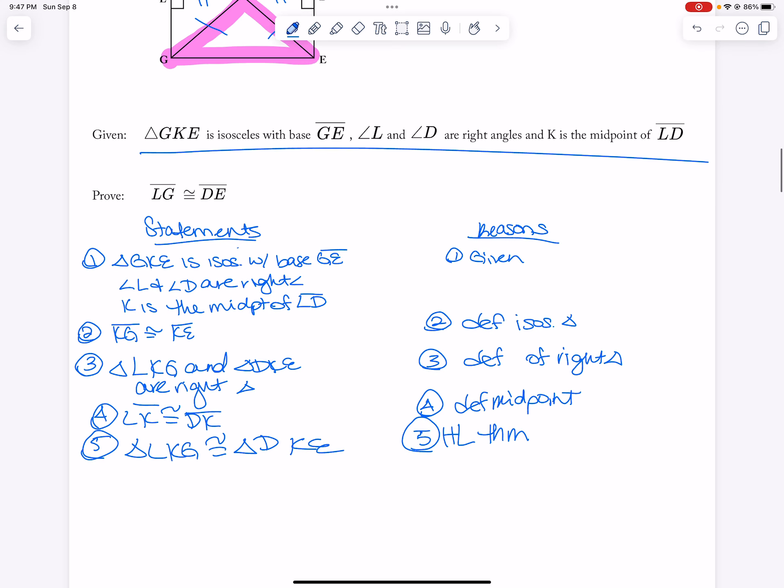And then the two side lines are congruent by CPCTC. So LG is congruent to DE by CPCTC.